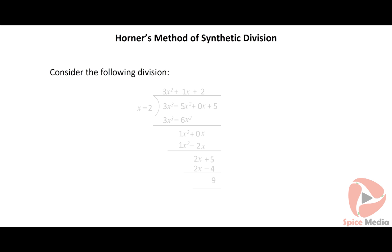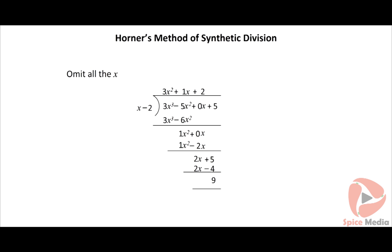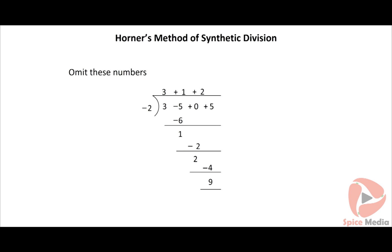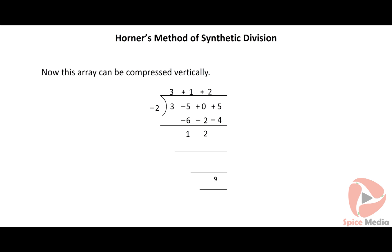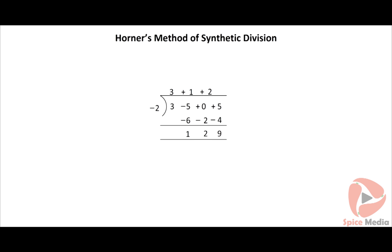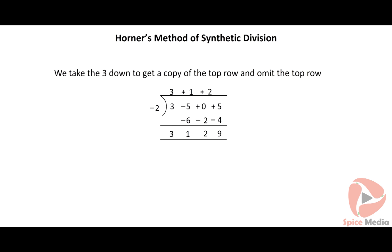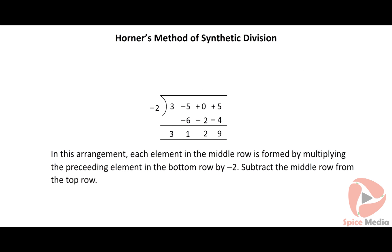The Horner's method of synthetic division is a simplified form of the long division method. Consider the following division: omit all x, circle the repeated numbers, omit these numbers, then compress this array vertically. We take the three down to get a copy of the top row and omit the top row. This simple method is called synthetic division.